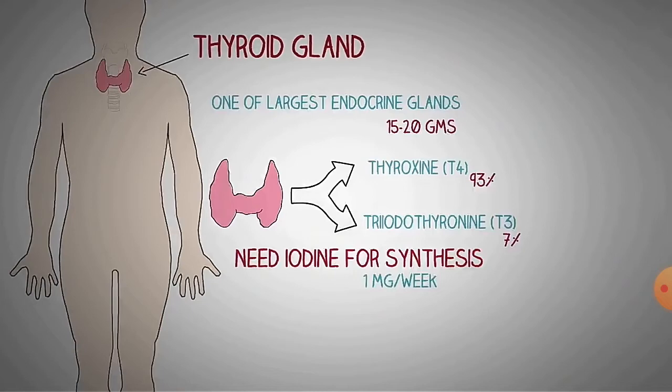Without iodine, it is impossible to produce thyroxine; thyroid hormones are very difficult to produce without it. The thyroid stimulating hormone (TSH), released from the pituitary gland, is responsible for enhancing the process of thyroid hormone production — meaning T4 production.